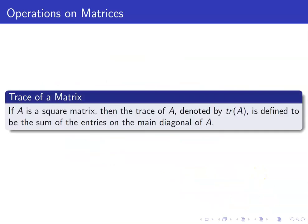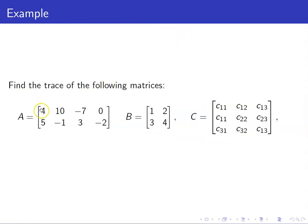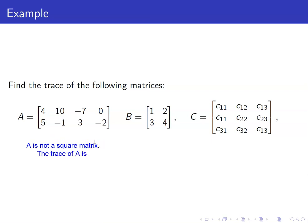We also discussed the definition of trace of a matrix. Take note that the trace of a matrix is only defined for square matrices. The trace of A, denoted by tr(A), is defined to be the sum of the entries on the main diagonal of A. For example, using the matrices we had earlier — can we compute the trace of A? Take note that A is not a square matrix, so the trace of A is undefined.